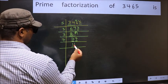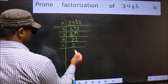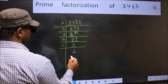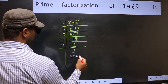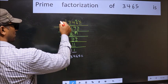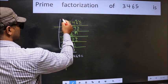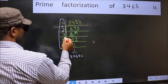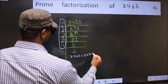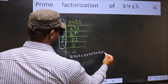Now here we have 11. 11 is a prime number. So 11×1=11. So we got 1 here. So the prime factorization of 3465 is the product of these numbers. That is 5×3×3×3×7×11.